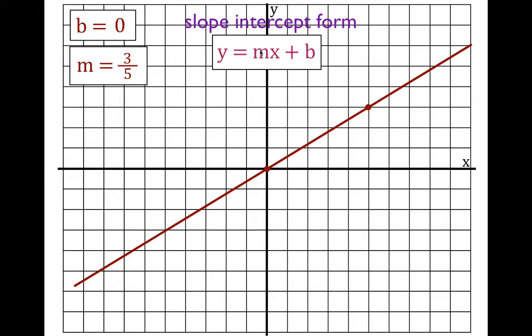Now we substitute these values into the slope-intercept form. b is zero, so we could write y equals three-fifths x plus zero, but by convention we don't write the plus zero. So the equation is simply y equals three-fifths x, where three-fifths is the slope m, and y and x are our variables.